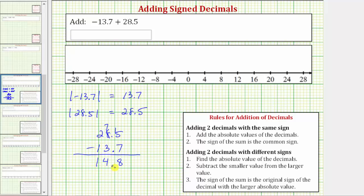So this difference is fourteen point eight, but step three is to determine the sign of the original sum. The sign of the sum is the original sign of the decimal with the larger absolute value. And because the positive 28.5 has the larger absolute value, the original sum is positive fourteen point eight, which remember is what we discussed because the positive 28.5 is outweighing the negative 13.7.